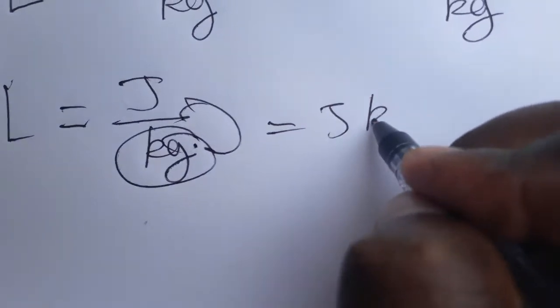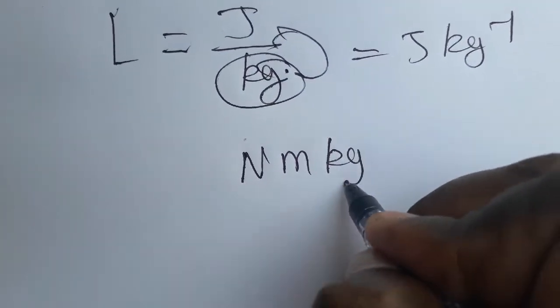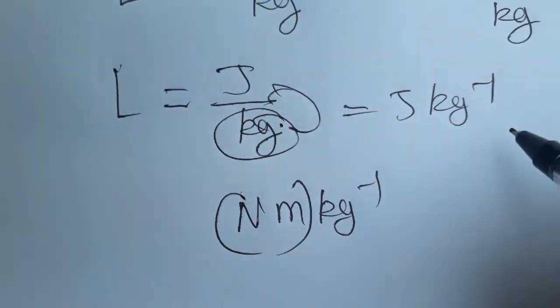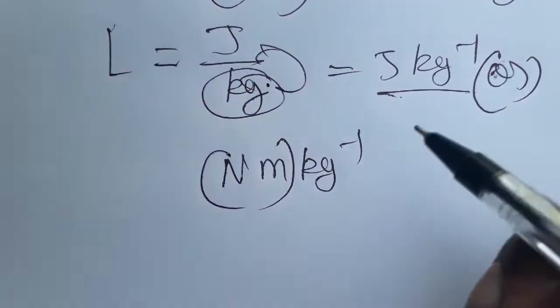From kg in denominator to numerator, I have taken it as joule kg inverse. What is joule? It's newton meter. So we have like different units: watt second by kg, or joule kg inverse.